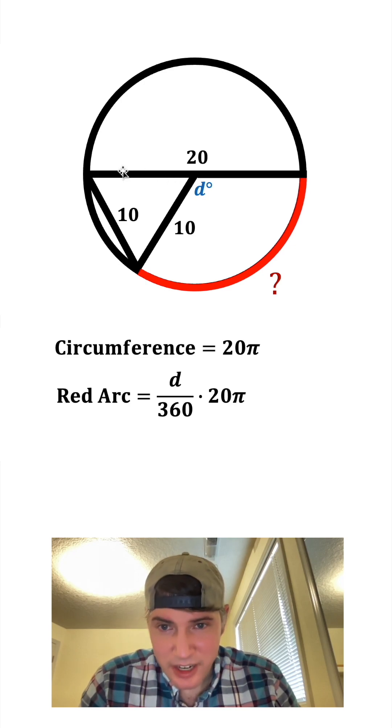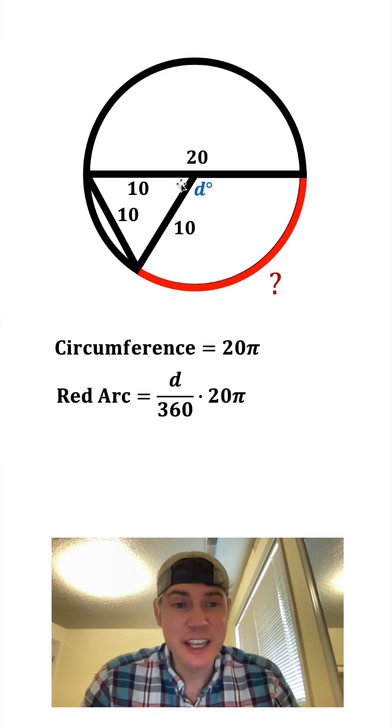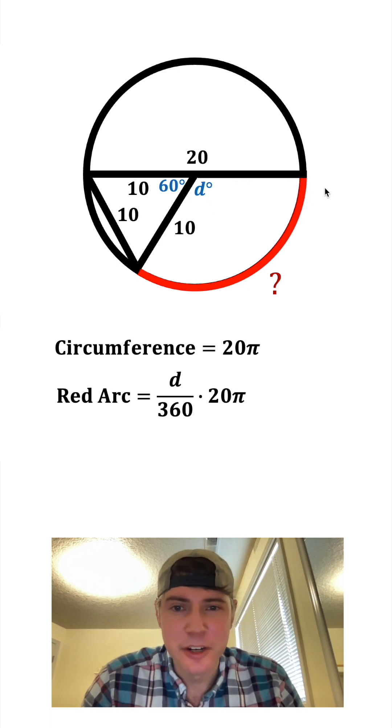Let's look right here. This piece of the diameter is also equal to 10, so we have a nice equilateral triangle right here. Each angle in every equilateral triangle is equal to 60 degrees and this 60 degrees plus this d degrees would equal 180 degrees, which means that our d is 120 degrees.